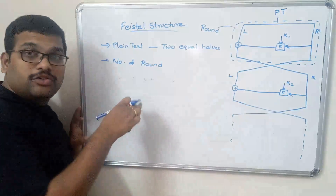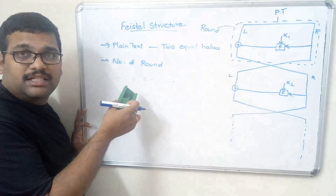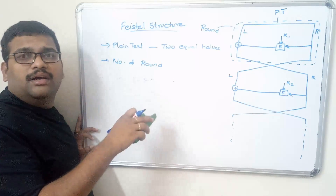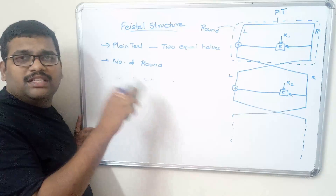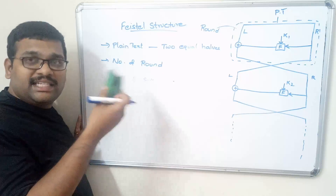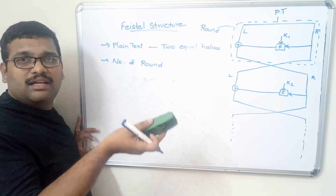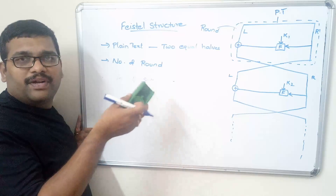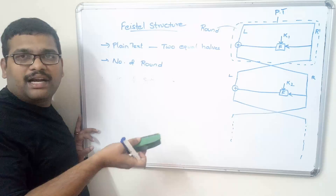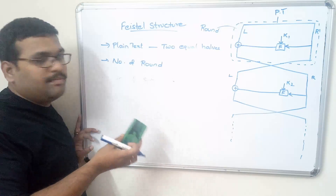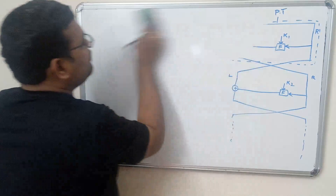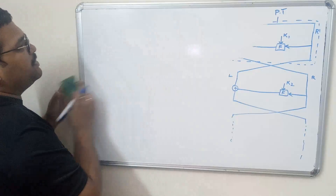Hope you understood the Feistel structure. If you see the example for this Feistel structure you can clearly understand it. In the next session I will give the example for this Feistel structure — that is the DES algorithm, Data Encryption Standard. Now let us have a look at the block cipher design principles.